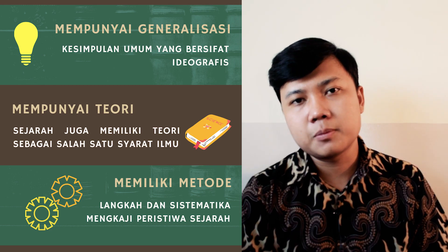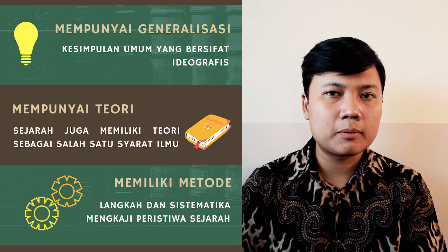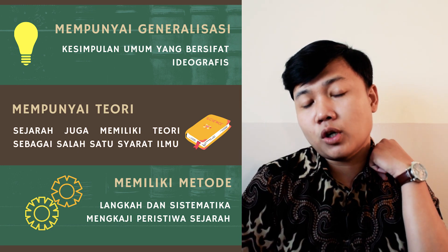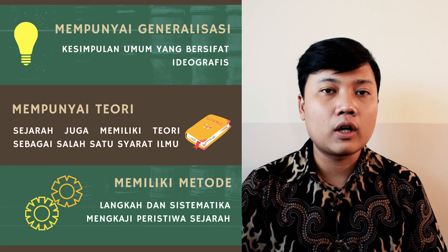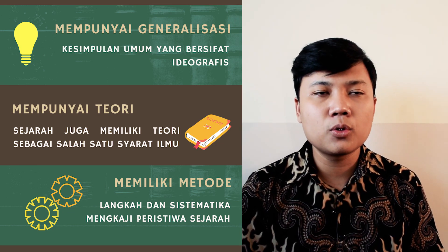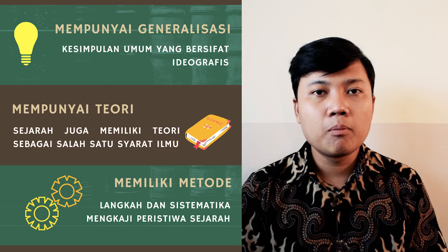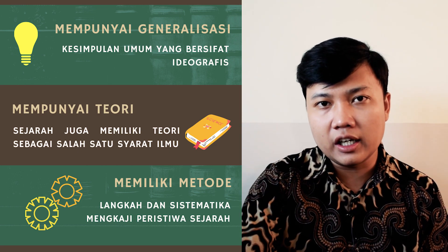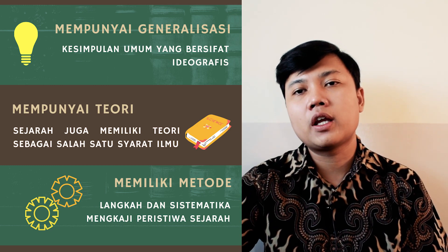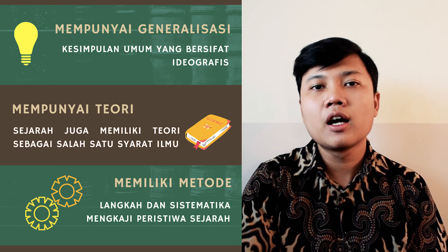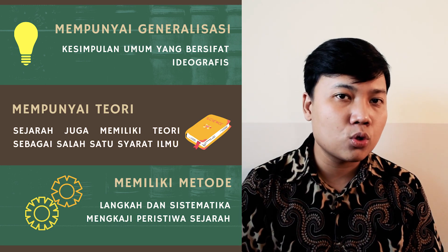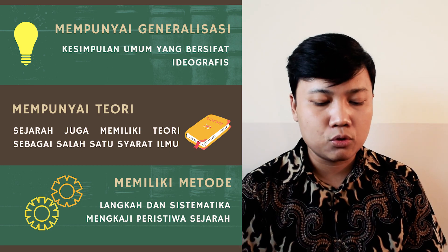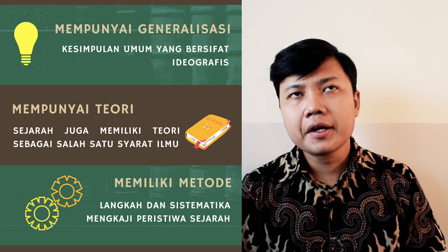Contoh lain selain Ibn Khaldun dan Arnold Toynbee adalah sisi deterministik gerak sejarah yang dikemukakan oleh Karl Marx dalam materialisme historisnya. Menurut Marx, gerak sejarah umat manusia sangat ditentukan oleh aktivitas ekonomi atau corak produksi. Gerak sejarah manusia dari awal kemunculan di muka bumi sampai zaman industri sangat ditentukan oleh aktivitas ekonominya — mulai dari ekonomi, baru merembet ke politik, sosial, budaya, dan sebagainya. Ini disebut sebagai determinisme ekonomi.